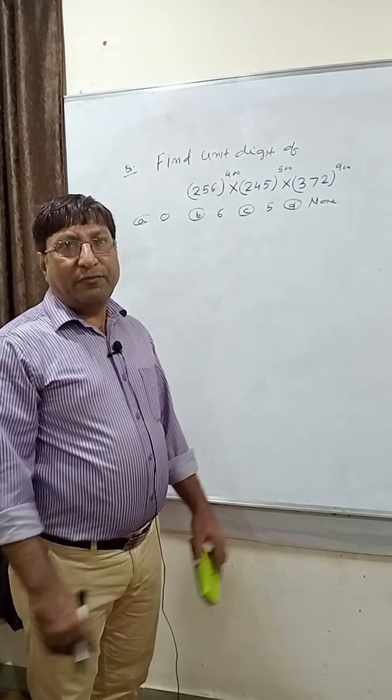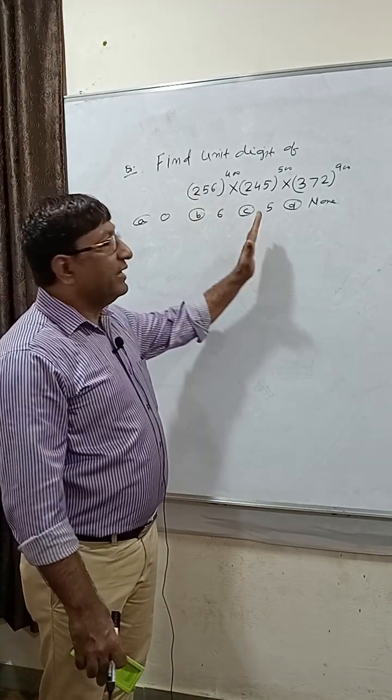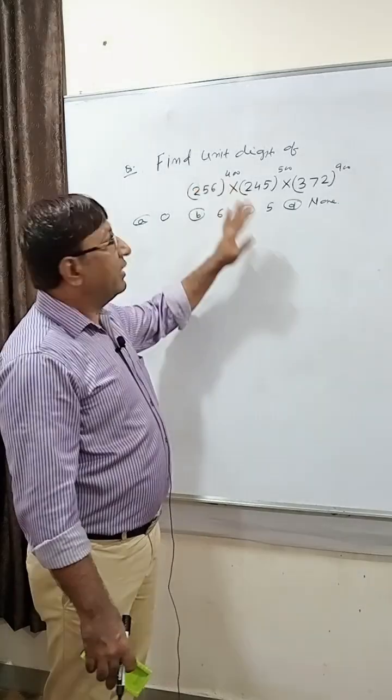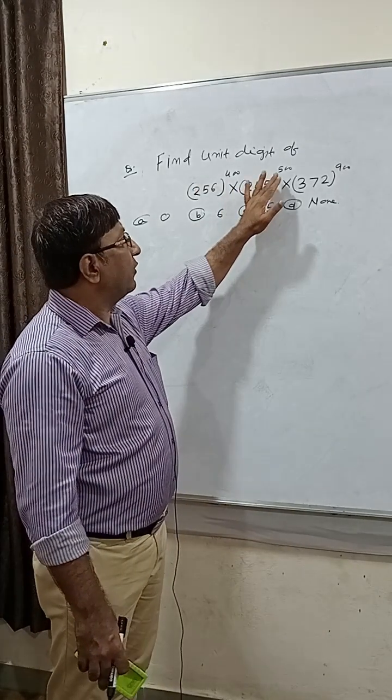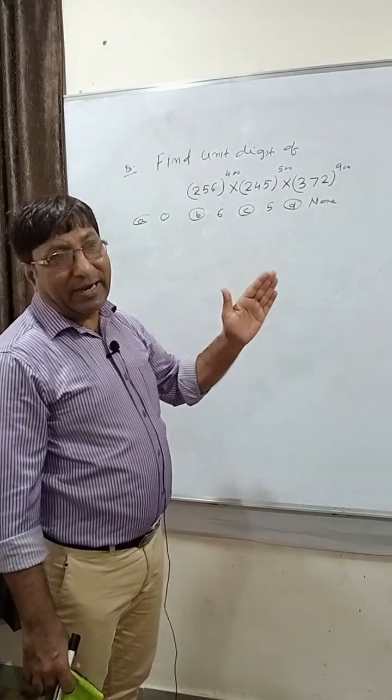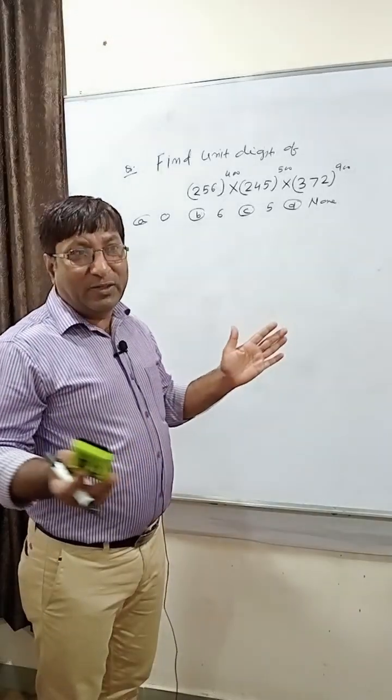Most important question of aptitude. Let us see the question: find unit digit of 256 to the power 400, 245 to the power 500, 370 to the power 900. So it's looking very typical and very lengthy question, but we can solve this question very easily.